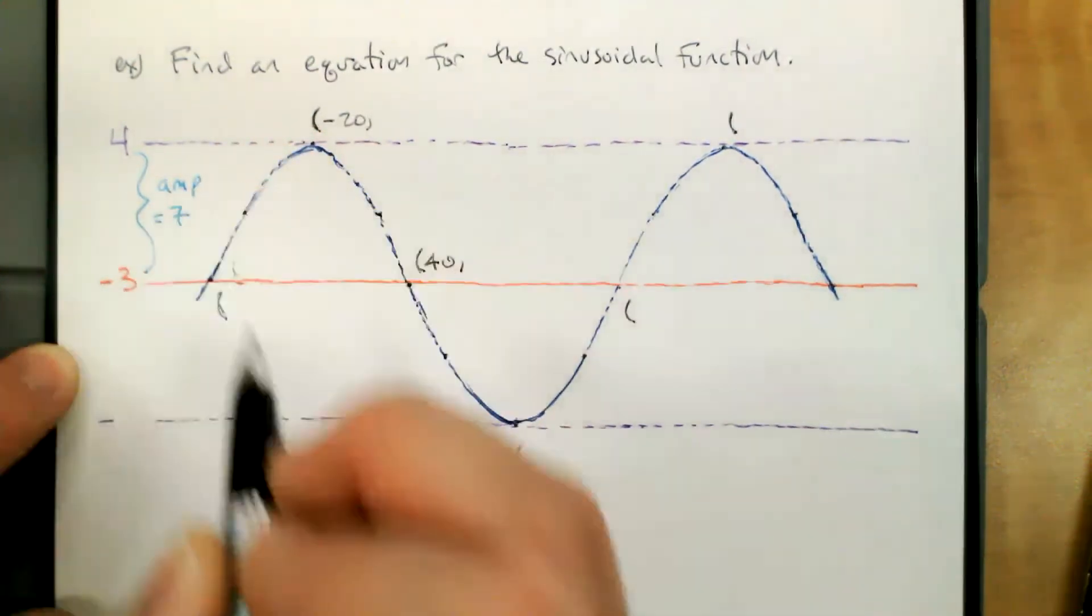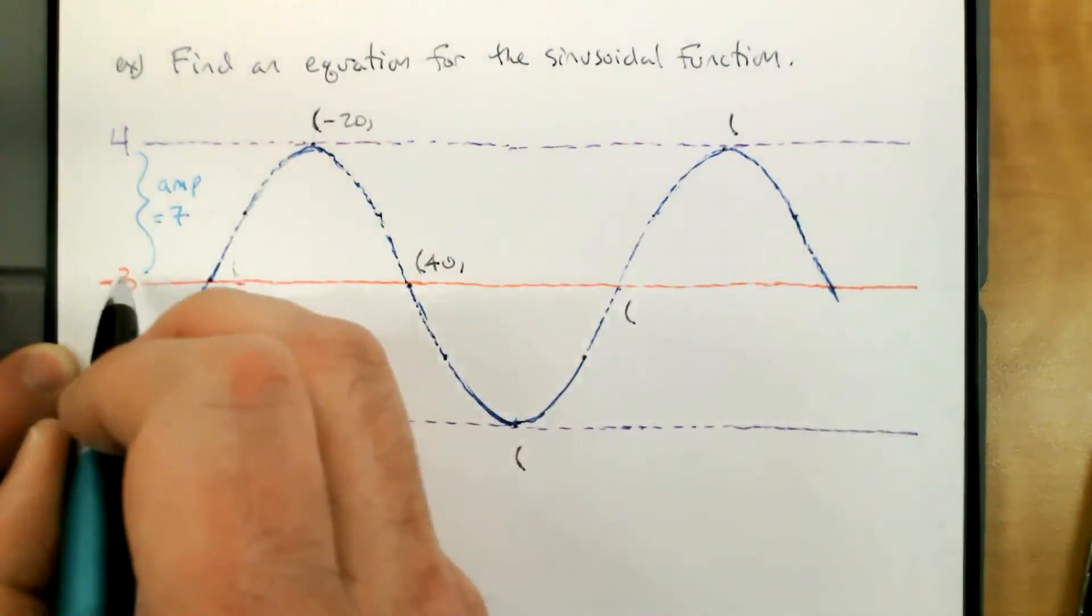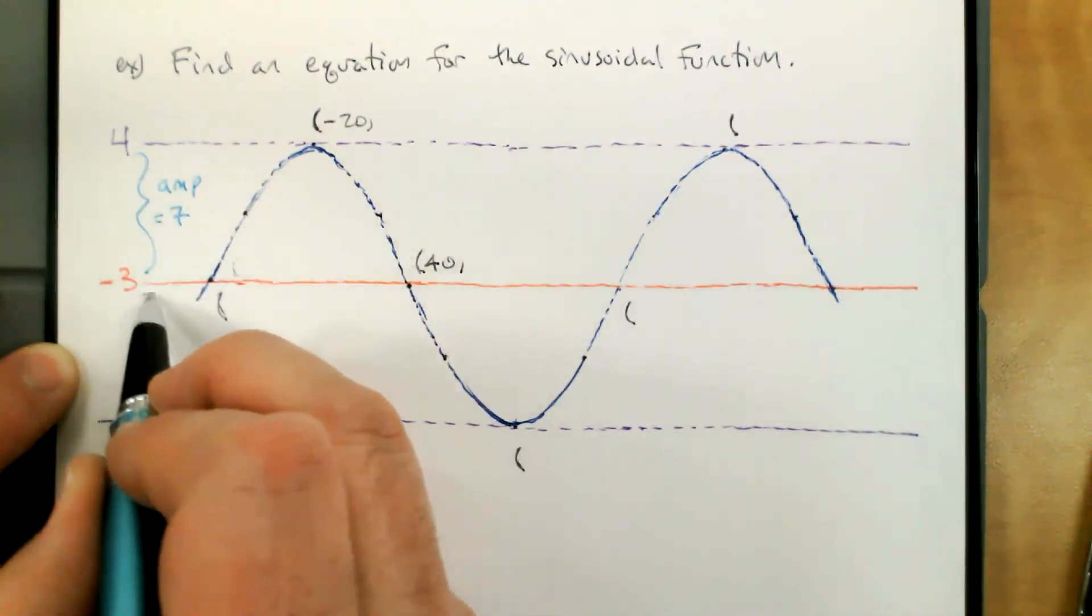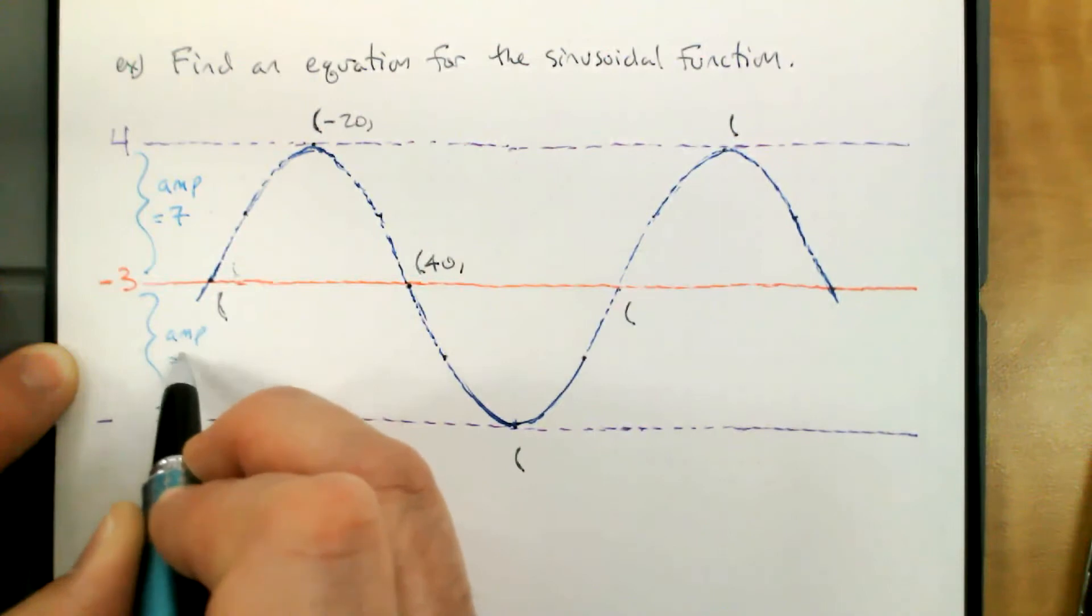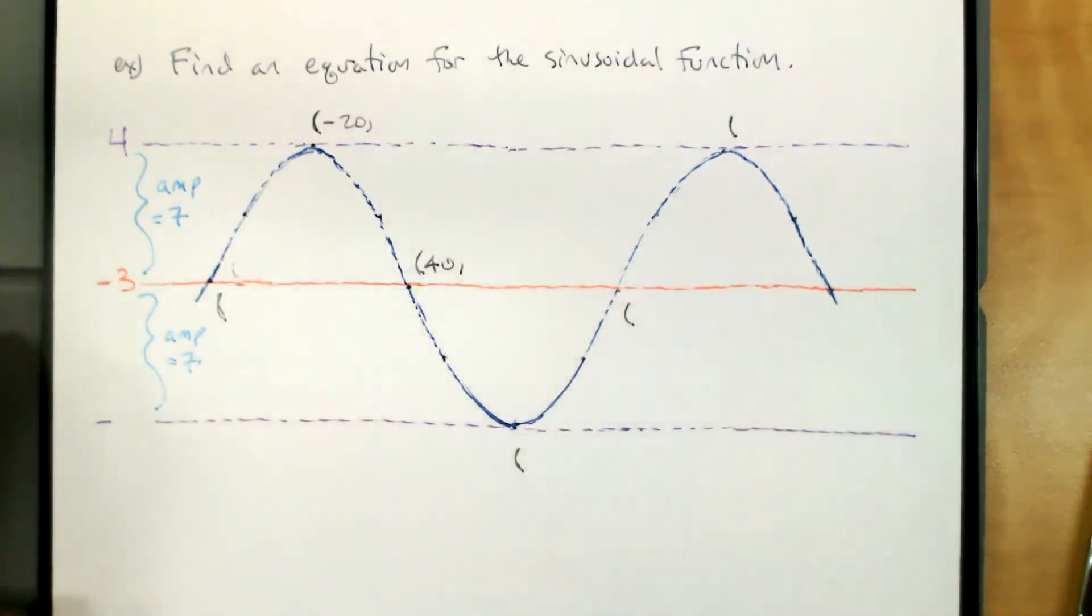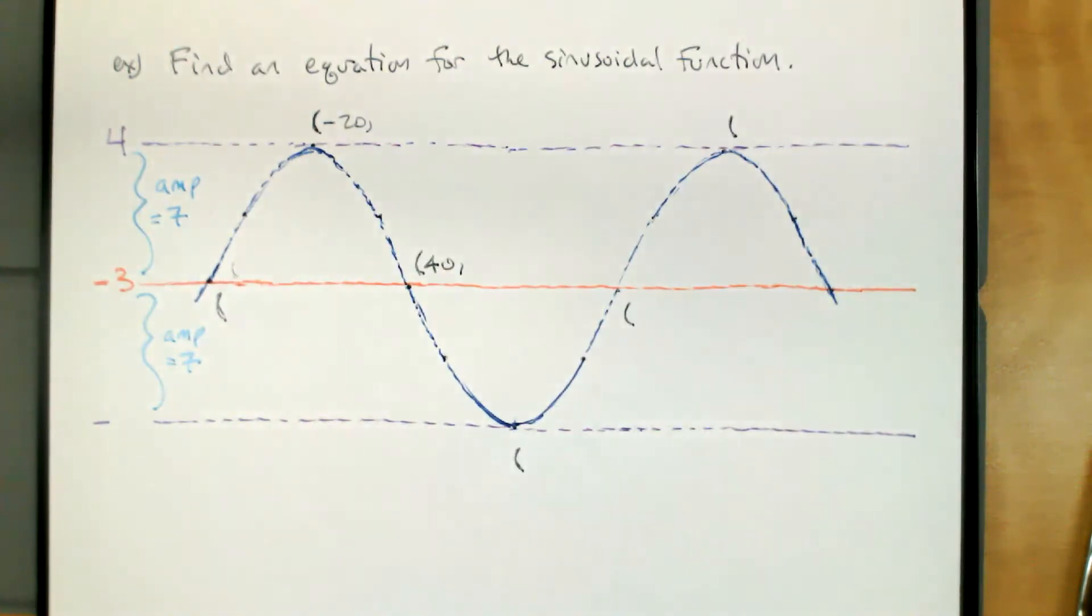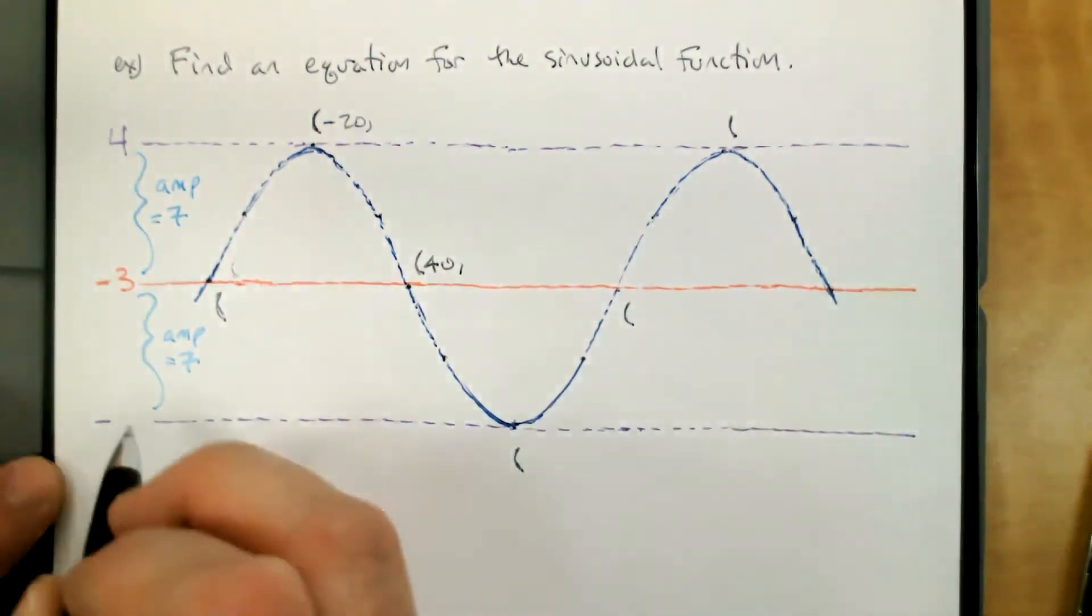Seven. And if the amplitude is seven, that's the distance from the middle to the top, and it is also the distance from the middle to the bottom. So from negative three down seven, that'll take us to the bottom at negative ten.